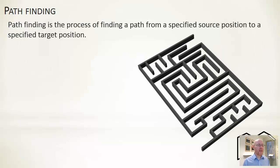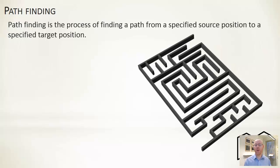It's important to make a distinction here: pathfinding is different and distinct from path following. When we looked at steering algorithms, we saw that given a path, we could use steering behaviours to follow it. What we're looking at here is really about building that path in the first place — sketching out a number of connected points that, if followed, will bring you from your current to some defined target position.